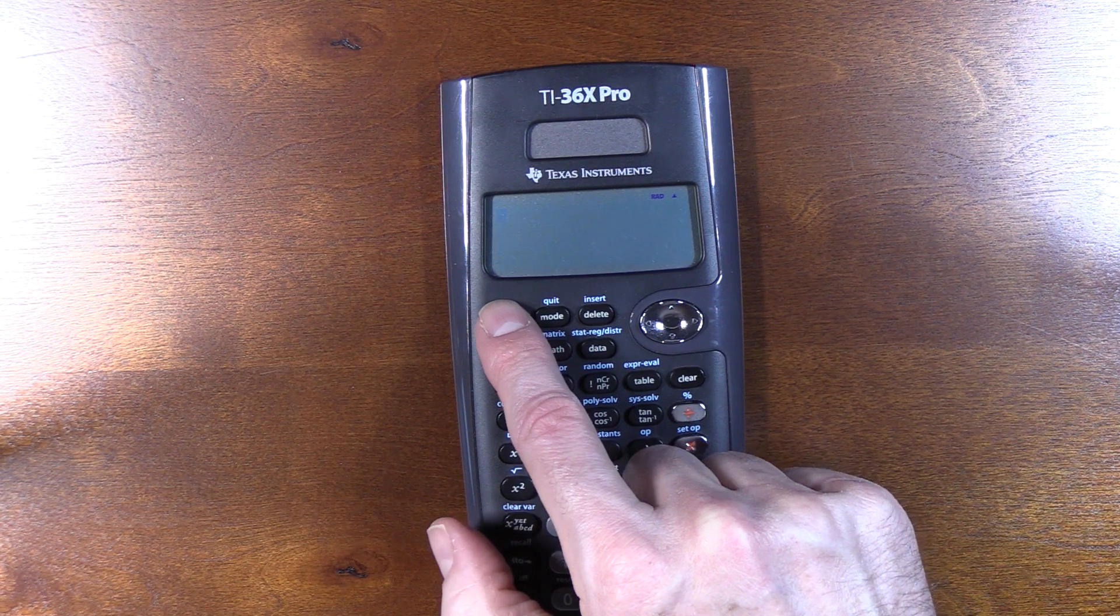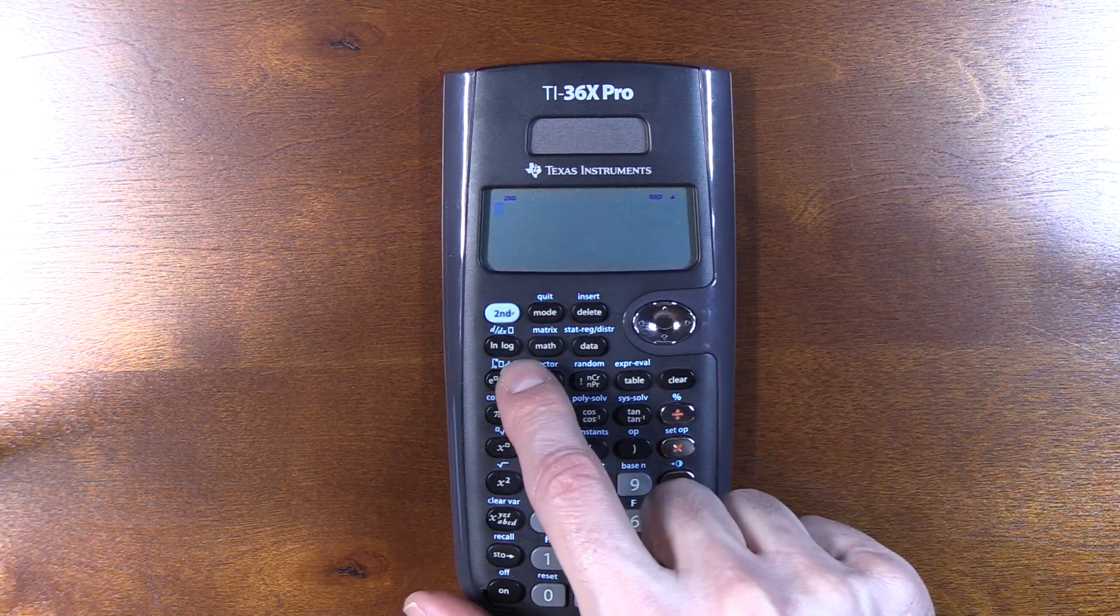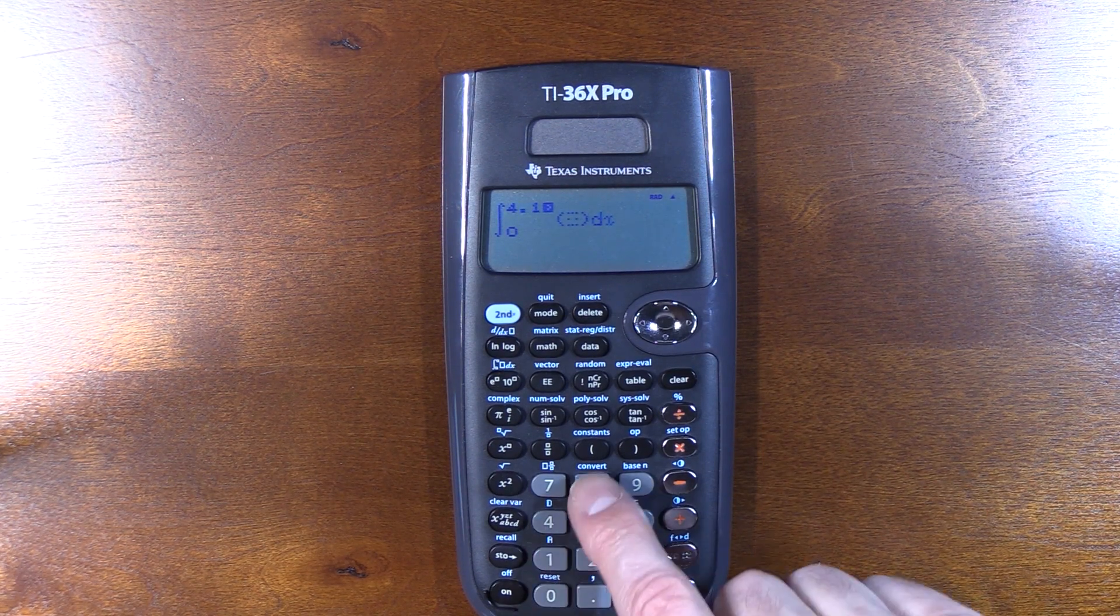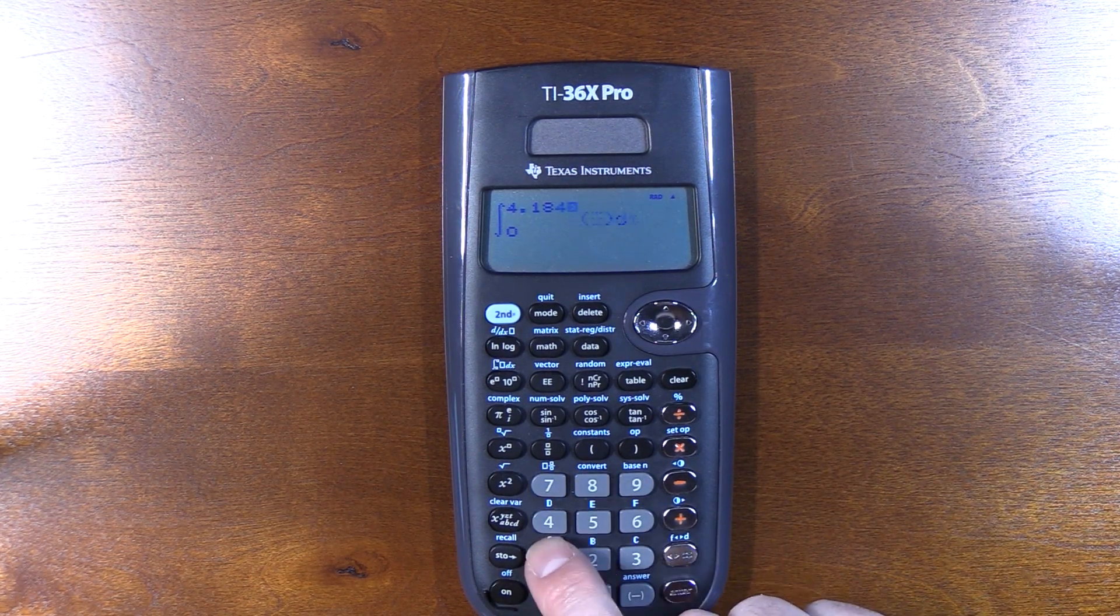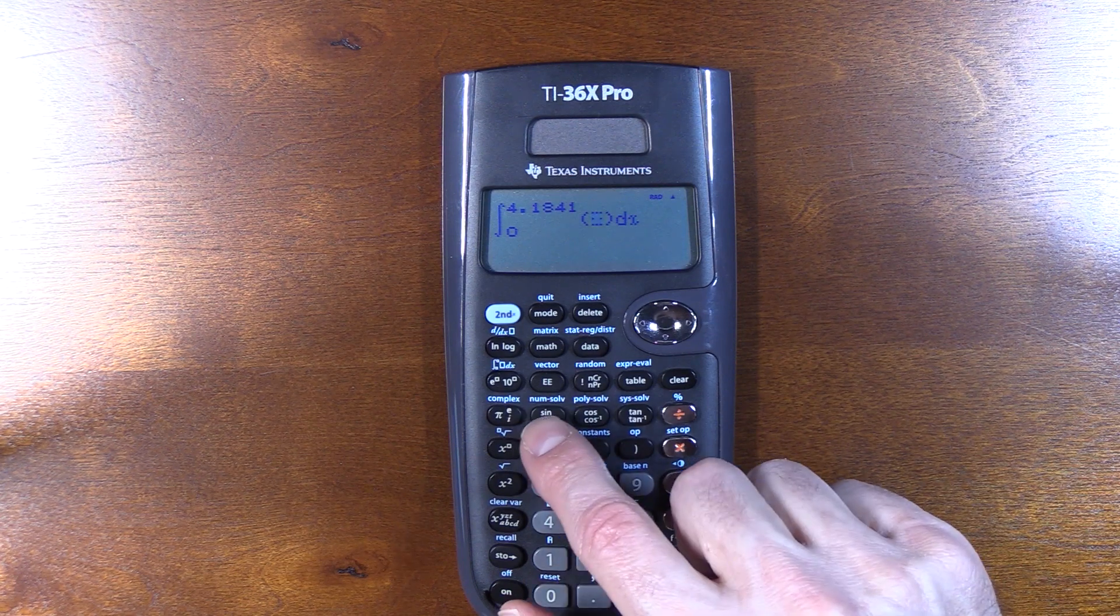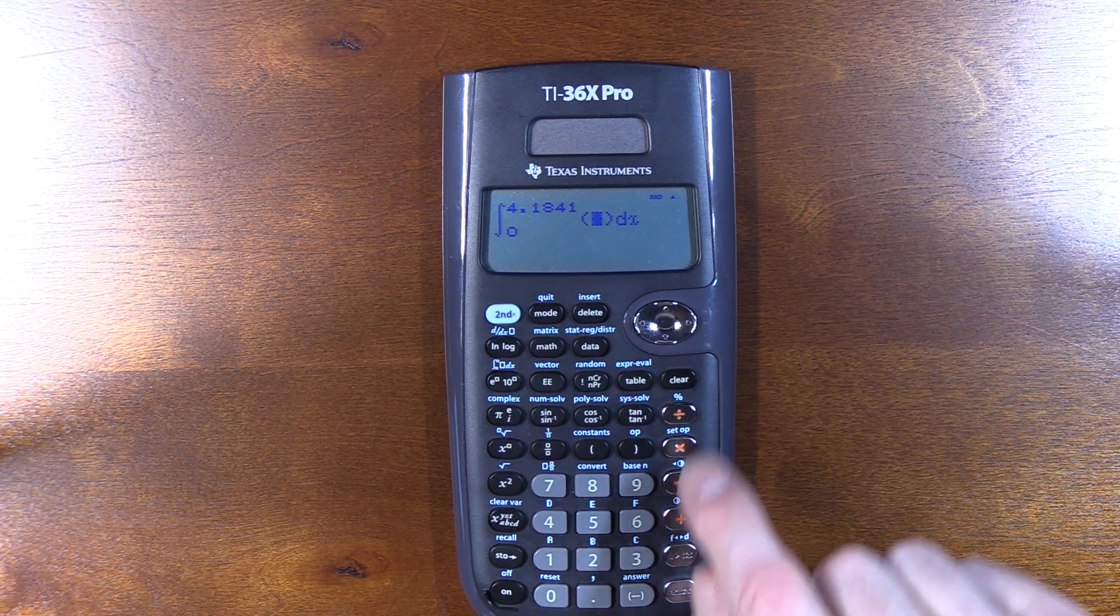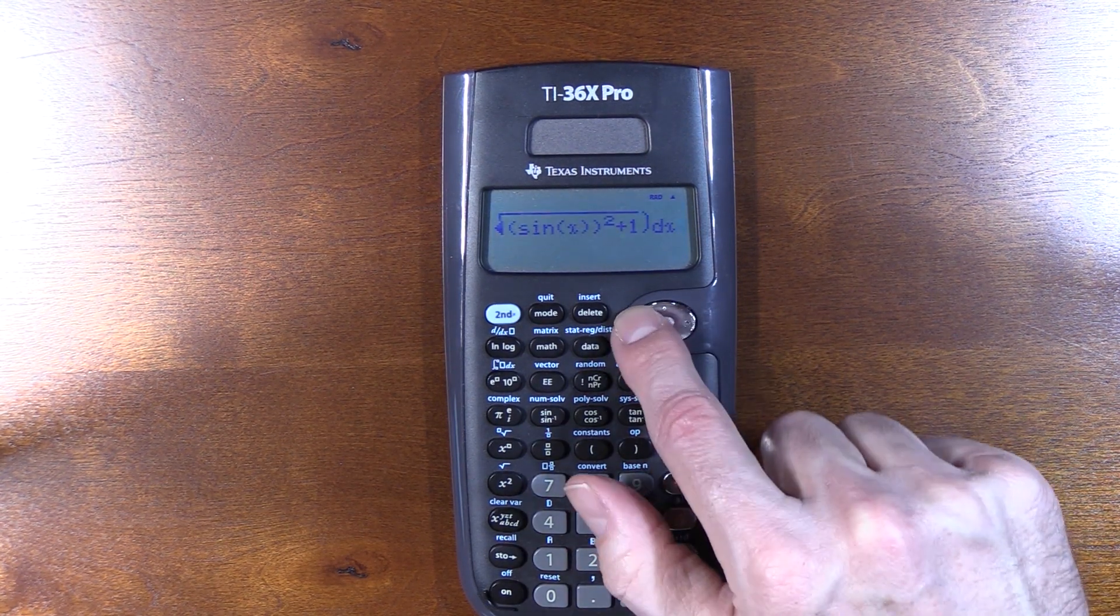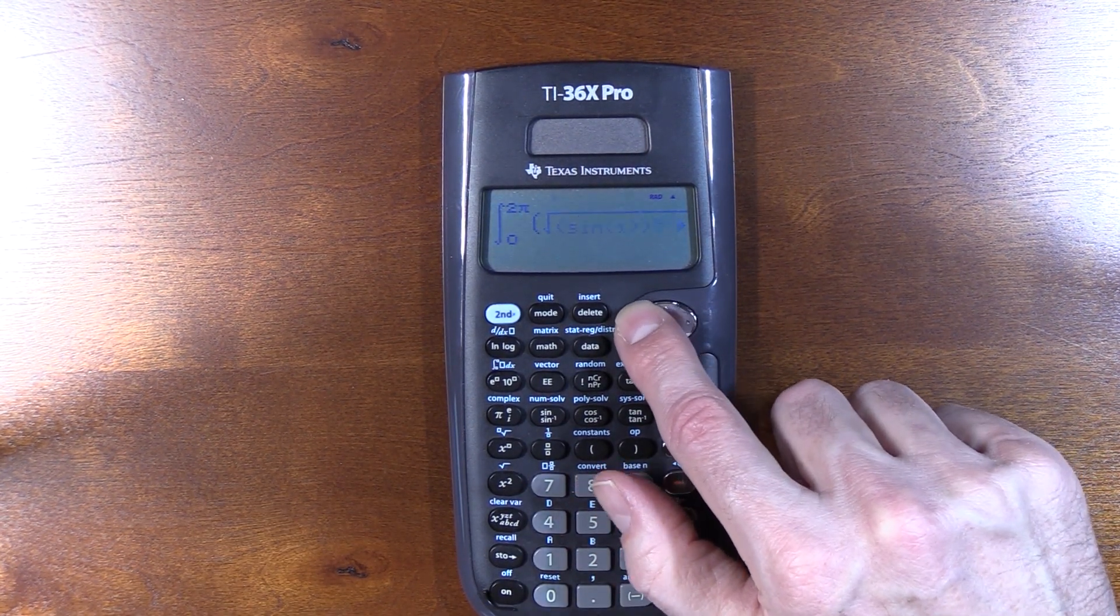And let's do a definite integral from 0 to what we found, 4.1841, and we've got to type this thing in again. Oh, actually, you know what? Let me be smart. Here you go. Here's an advantage of this calculator. Go back up until you find where you just did it, and change your numbers.